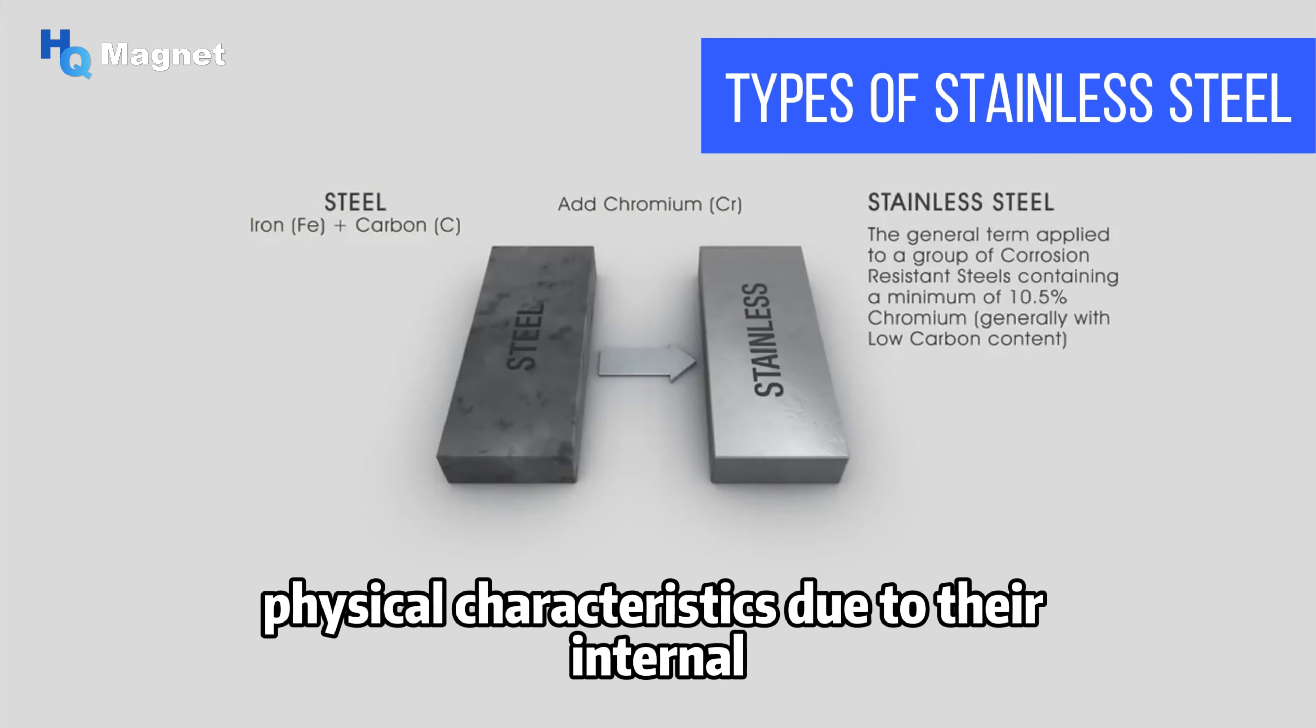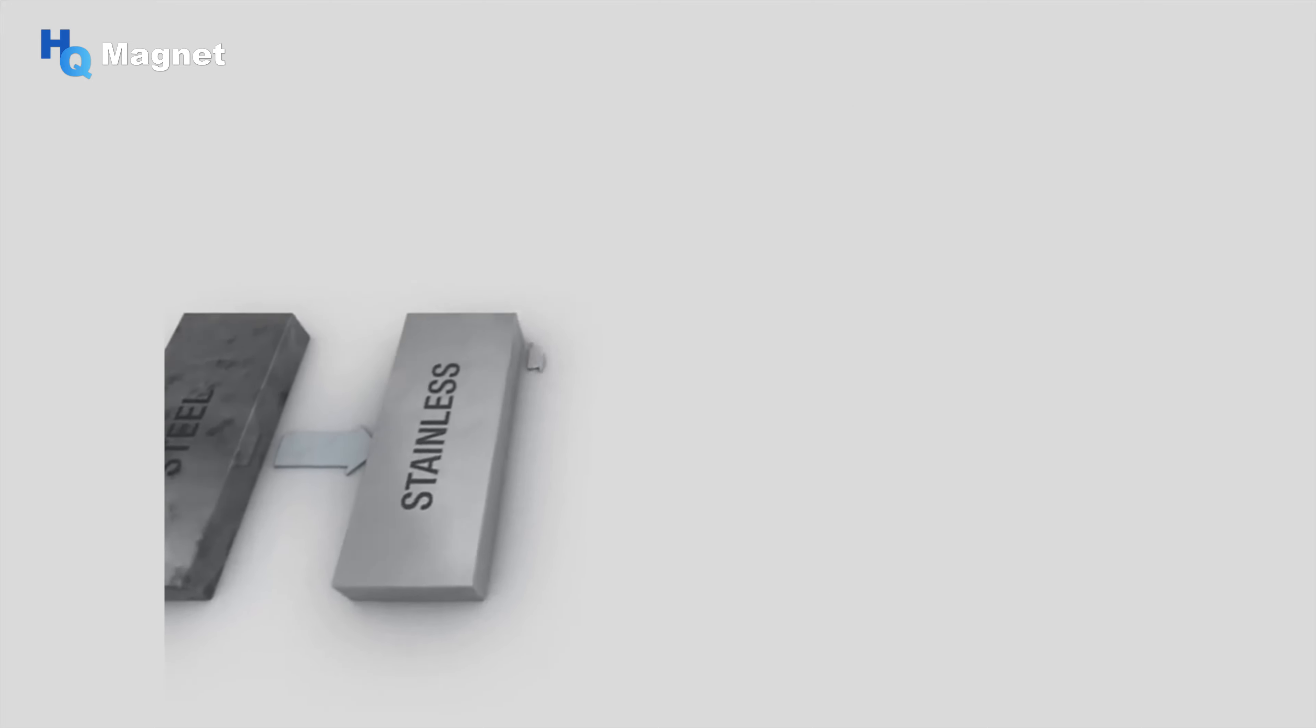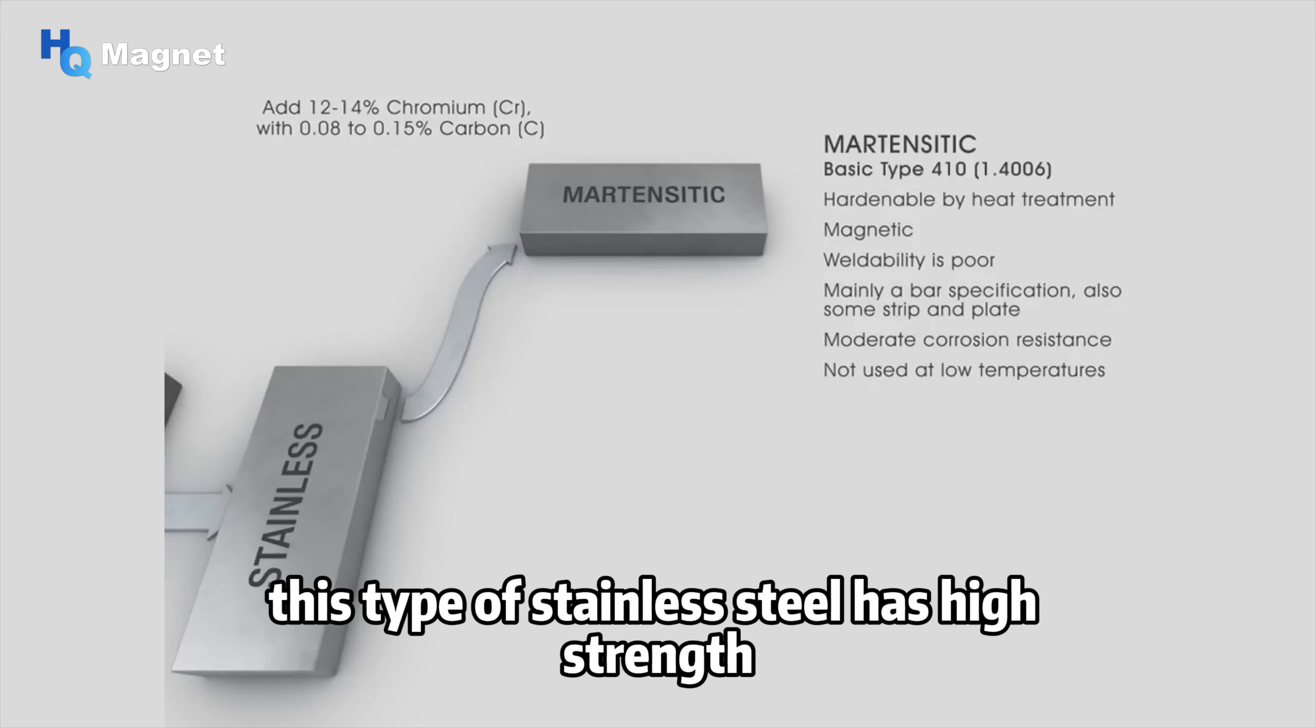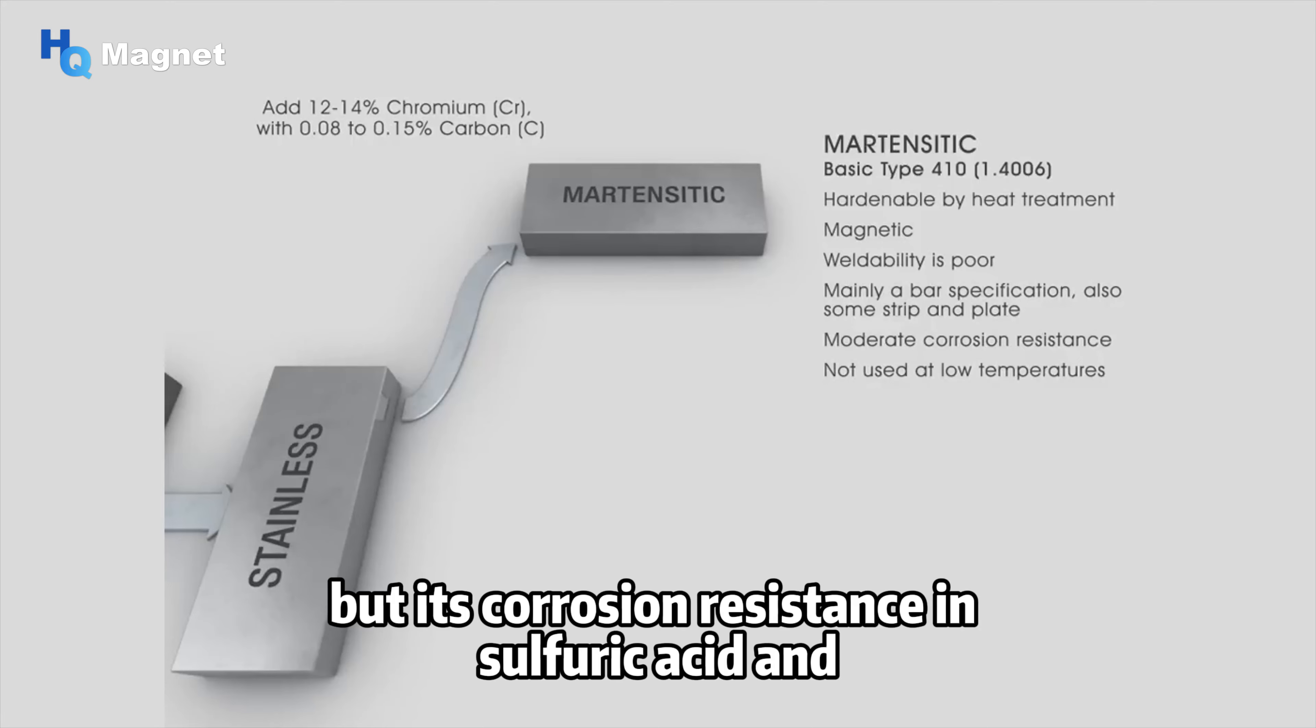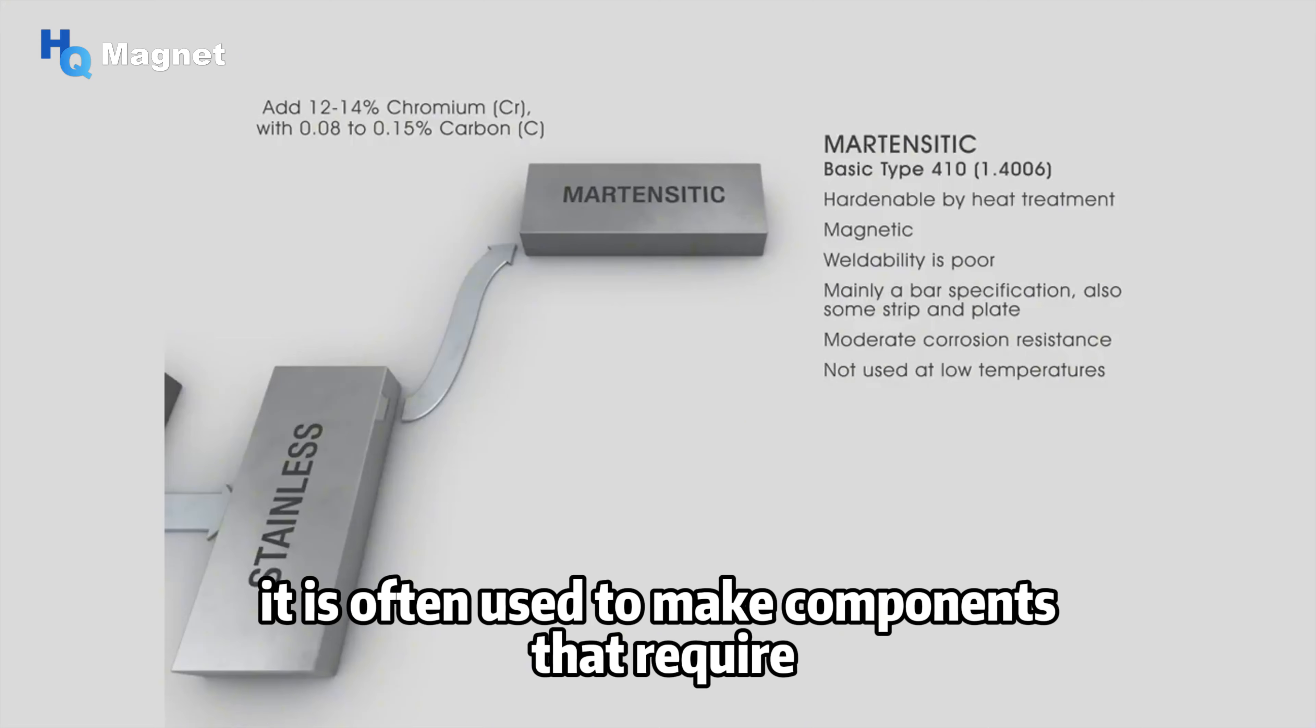Martensitic stainless steel contains 12 to 18% chromium. This type of stainless steel has high strength but its plasticity and weldability are relatively low. Martensitic stainless steel has good corrosion resistance in oxidizing media, but its corrosion resistance in sulfuric acid and hydrochloric acid is very low. It is often used to make components that require high strength but do not require high corrosion resistance, such as aircraft skins.